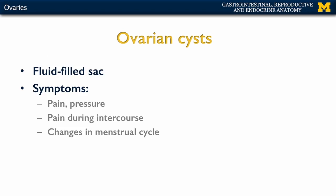One clinical topic to discuss regarding the ovaries is ovarian cysts — fluid-filled sacs either within or on the outside of the ovaries. They're fairly common, sometimes asymptomatic, and oftentimes go away on their own. Most of the time they're non-cancerous; typically if they are cancerous, it's in individuals 40 years old or older. Symptoms include pain, pressure, pain during intercourse, and changes in menstrual cycle irregularity. In larger ovarian cysts, surgery may be required to relieve symptoms.